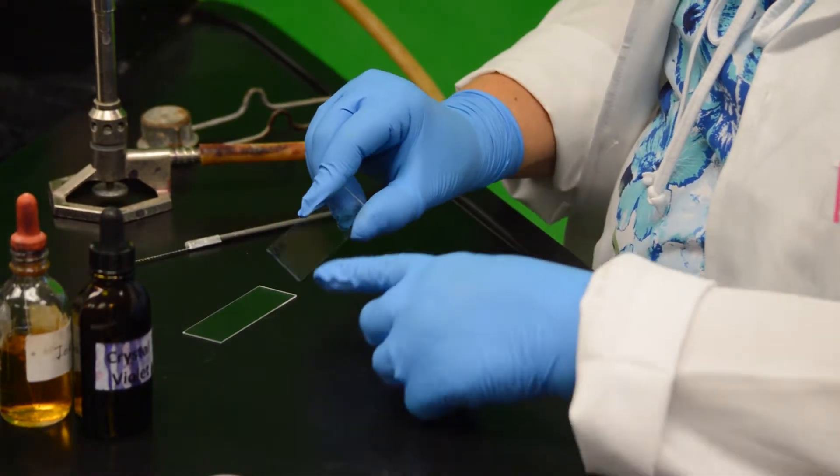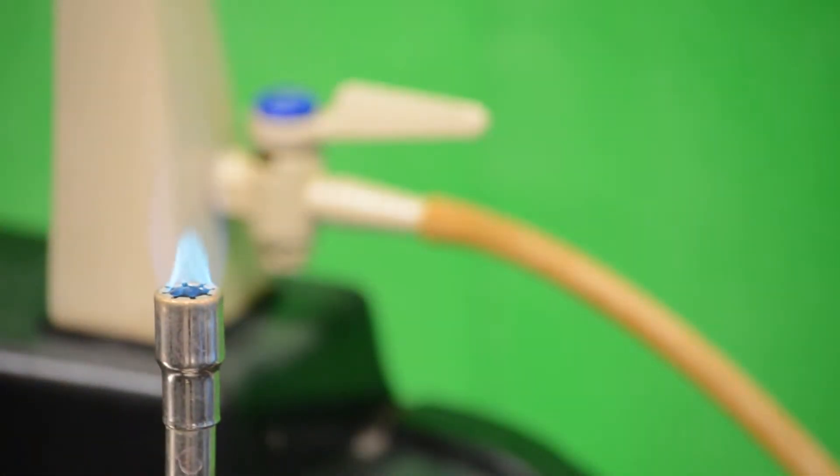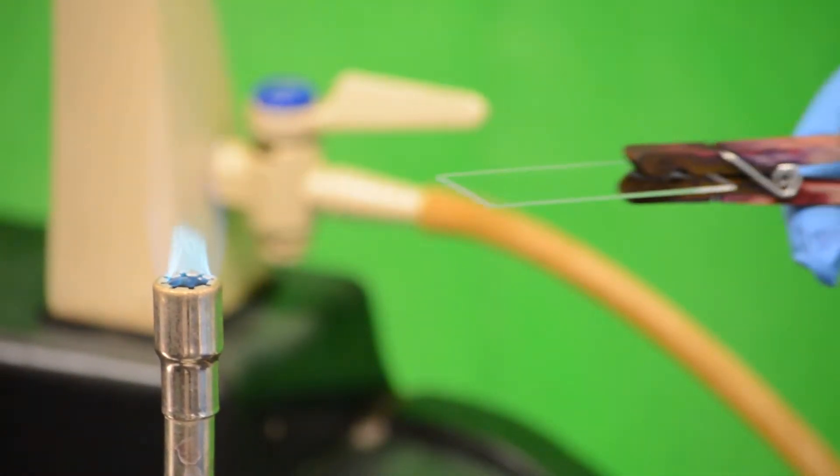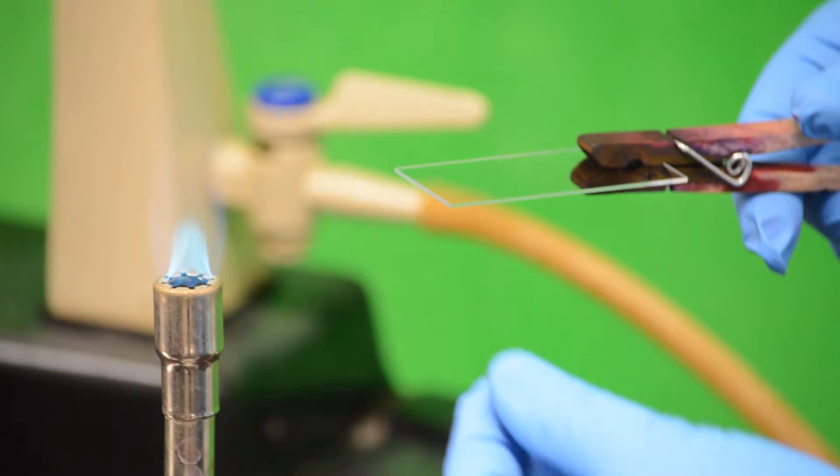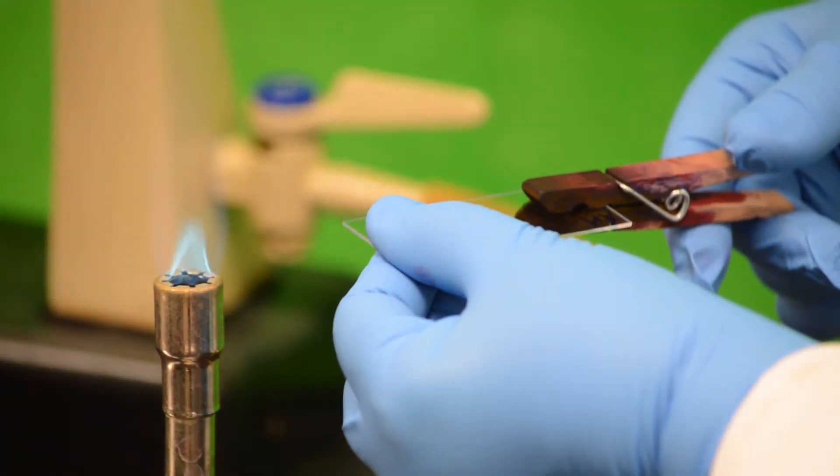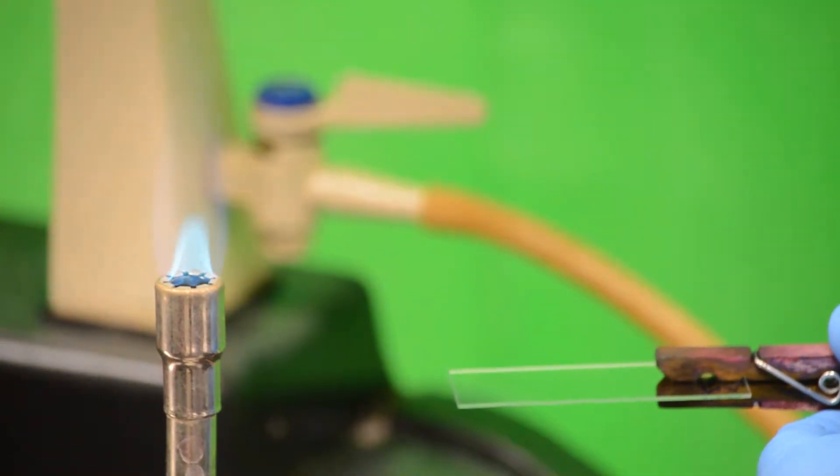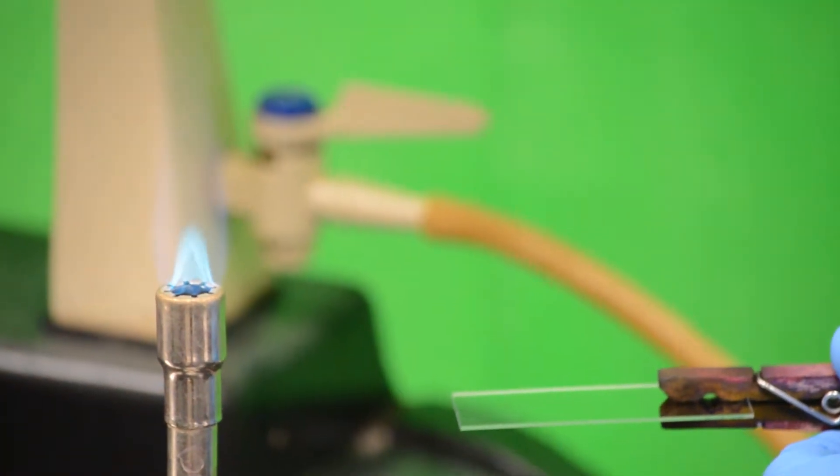Now pass the slide through the Bunsen burner flame two or three times. This is to dry off the slide and remove any oils or lint that might be present. The slide should not feel hot to the touch. Now your slide is ready to be used.